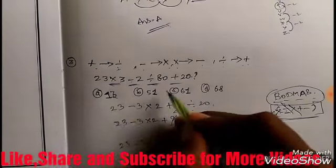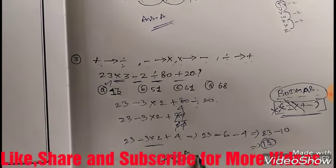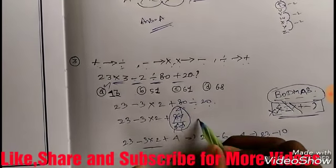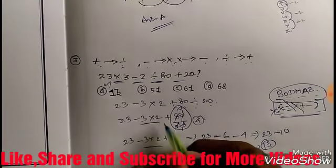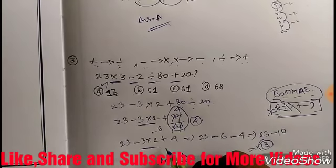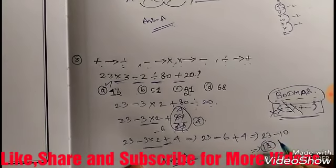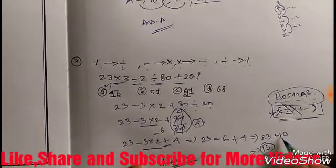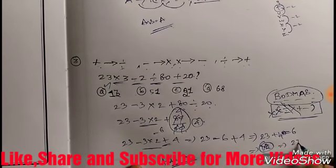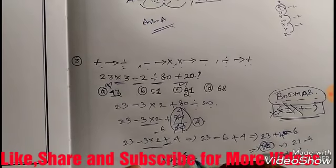Wait, correction. It's not 4, we need to see. Sorry, 23 plus 4 is 27 minus 6, so answer is 21, option C.